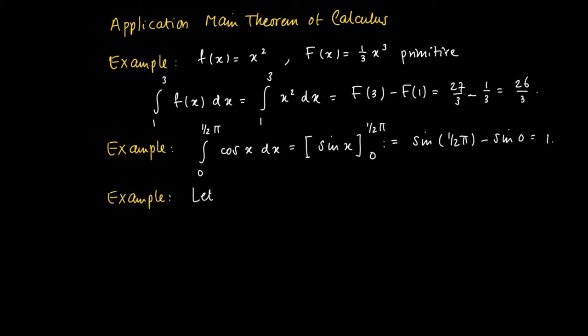A different kind of example is where we have functions with a variable bound. For instance, g(x) equals the integral from 0 to x squared of e to the power t dt. Suppose we want to calculate the derivative of this function. We can do it by two methods.